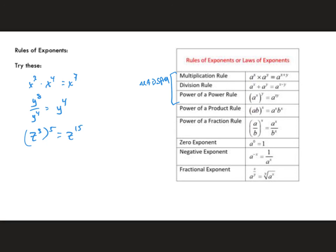Power of a product and power of a fraction are important — they pop up when you least expect it. (3x)⁴ = 3⁴ · x⁴ = 81x⁴, distributing the exponent to each factor. (y/5)³ = y³/125. Three more rules: anything raised to the zero power (except zero itself) equals 1. A negative exponent means move across the fraction line and change the sign of the exponent.